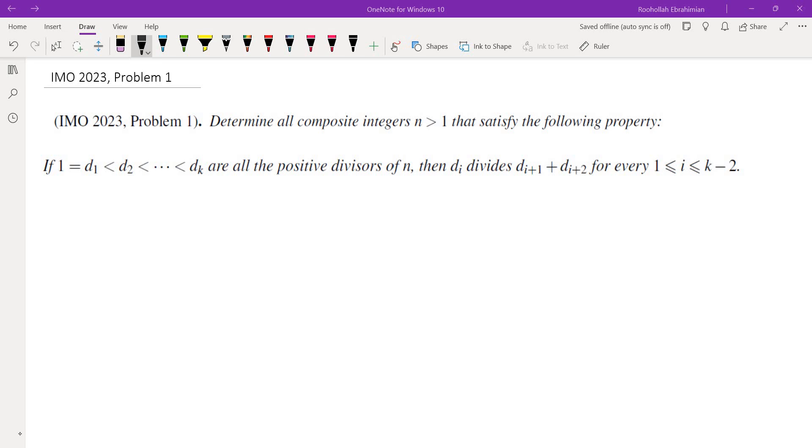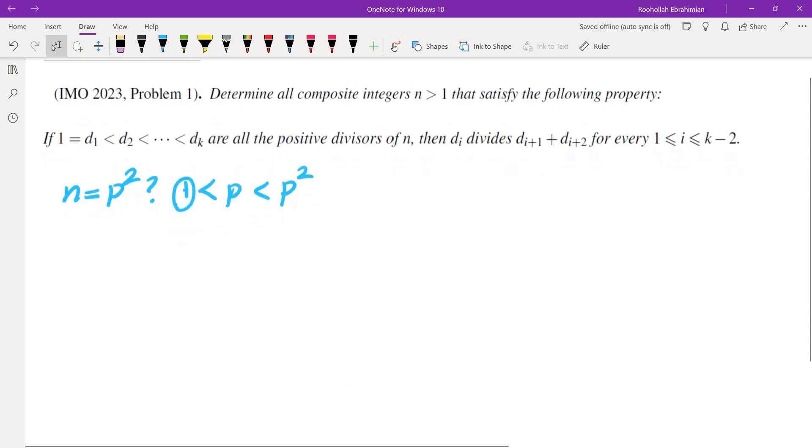Let's start with perhaps n equals p squared. If n is a perfect square of a prime, then the prime factors are going to be 1, p and p squared. Clearly the first one divides the sum of the second and third one. How about if we have p cubed? We have 1, p, p squared and p cubed. 1 clearly divides the sum of these two and p divides p squared plus p cubed. So that's in fact a possibility.